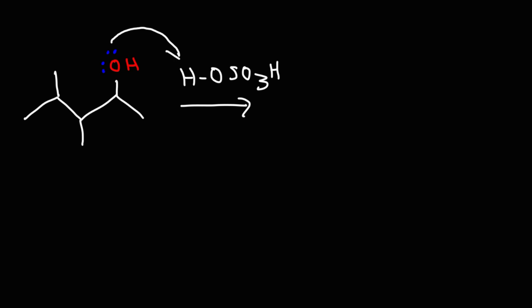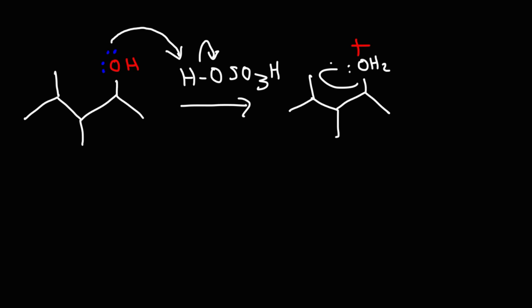So like before, the first step is going to be protonation of the alcohol functional group. In the next step, the leaving group is going to leave. Notice that we have a secondary carbocation intermediate — the plus charge is on a carbon that's attached to two other carbons, so that makes it a secondary carbocation.